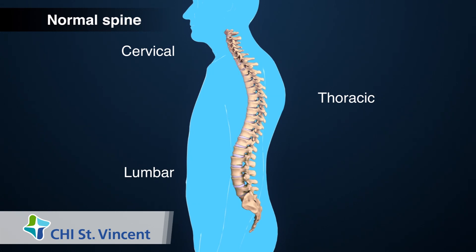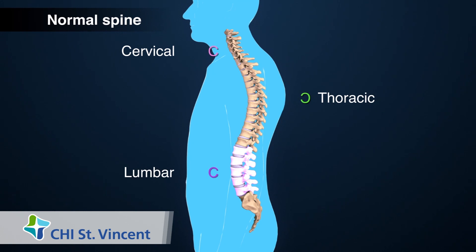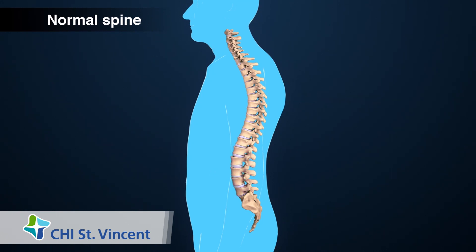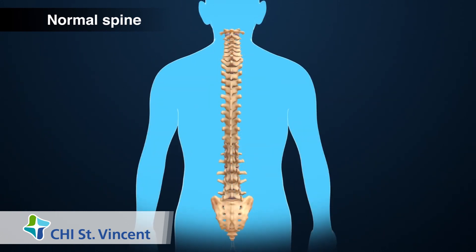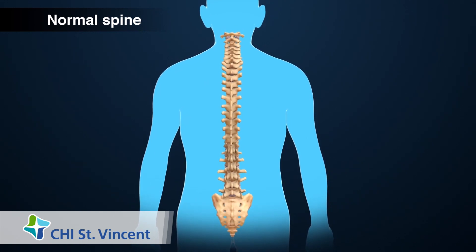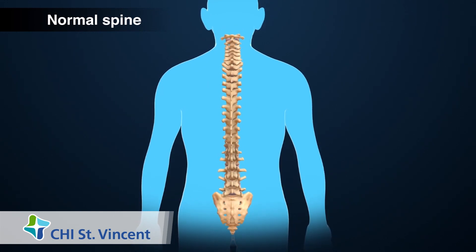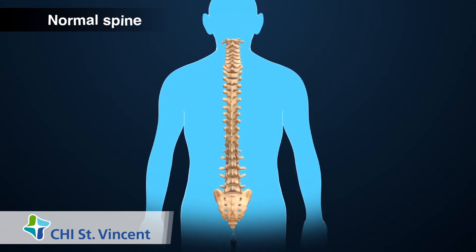Looking at it from the side, the spine normally has three curves: a C in the cervical spine, a reverse C in the thoracic spine, and another C in the lumbar spine. Viewed from behind, the spine should appear to be completely straight, up and down.